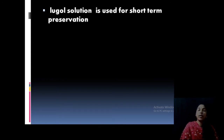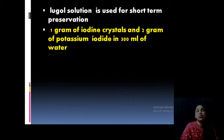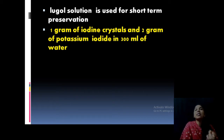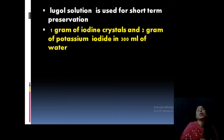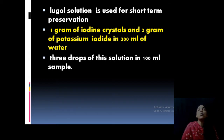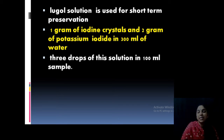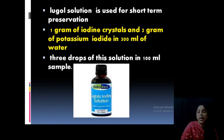Another very important method for liquid preservation is Lugol solution. To prepare Lugol solution, you need 1 gram of iodine crystals and 2 grams of potassium iodide in 300 ml of water. Take 300 ml water, 1 gram iodine crystals, and 2 grams potassium iodide — mix them and that becomes Lugol solution. From that Lugol solution, take 3 drops and put it in your 100 ml sample. This is a good preservative for short-term storage of algae.